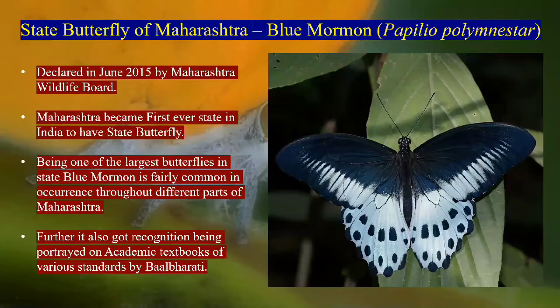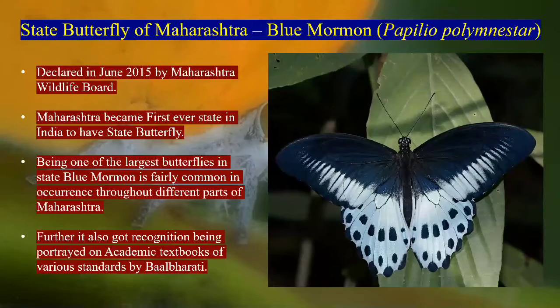From Maharashtra, other states started following this example — Kerala, Karnataka, and Tamil Nadu now have their own state butterflies too. Blue Mormon is fairly common in most parts of Maharashtra. After gaining recognition as the state butterfly, the Maharashtra government's academic body — Balbharti publication — started printing Blue Mormon on cover pages of school and college textbooks after 2016.